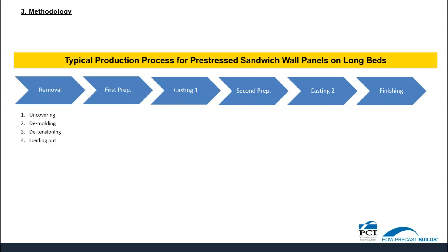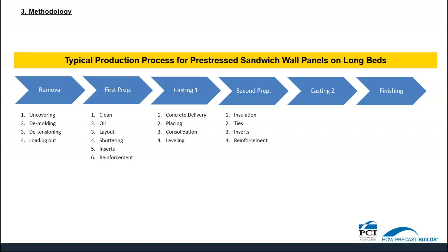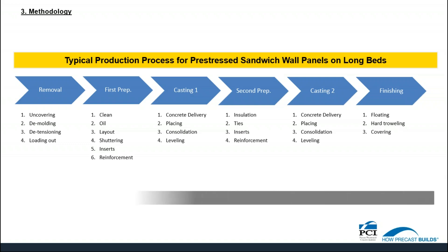In removal, we have uncovering, demoulding, detensioning, and loading out. First prep involves cleaning, oiling, layout, shuttering, inserts, and reinforcement. In first casting, it involves concrete delivery, placing, consolidation, and leveling. In second prep, we have insulation, ties, inserts, and reinforcement. In the second casting, we have concrete delivery, placing, consolidation, and leveling. And in finishing, we have floating, hard troweling, and covering. This is followed by the curing process.